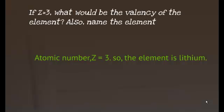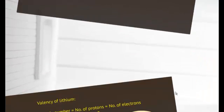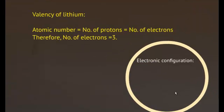Now, let us find out the valency of lithium. We already know atomic number is equal to number of protons which is equal to the number of electrons. Therefore, as the atomic number of lithium is equal to 3, we have number of electrons is equal to 3.